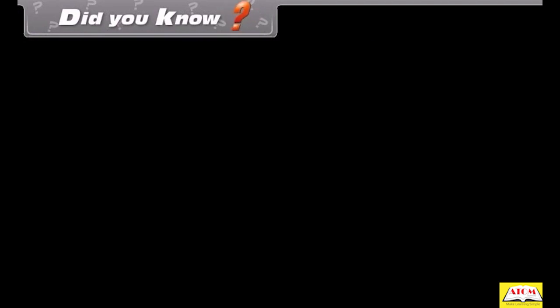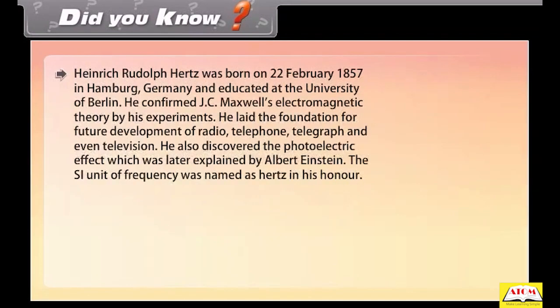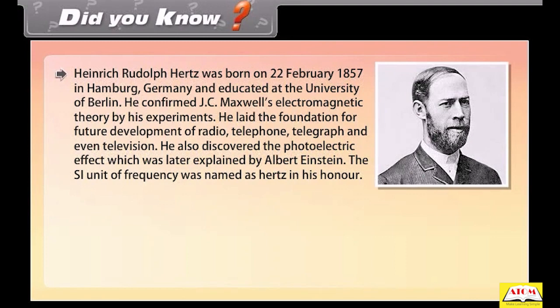Did you know? Heinrich Rudolf Hertz was born on 22nd February 1857 in Hamburg, Germany and educated at the University of Berlin. He confirmed J.C. Maxwell's electromagnetic theory by his experiments. He laid the foundation for future development of radio, telephone, telegraph, and even television. He also discovered the photoelectric effect which was later explained by Albert Einstein. The SI unit of frequency was named as hertz in his honour.